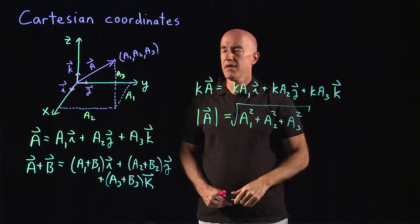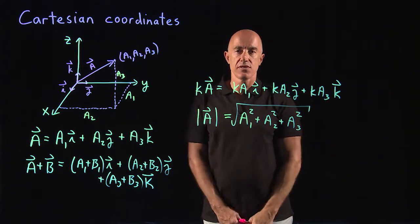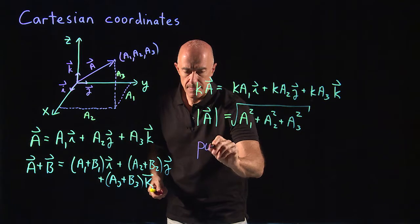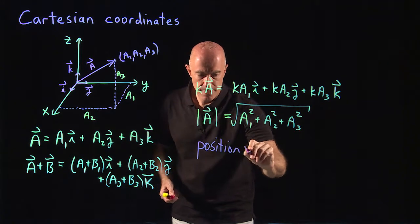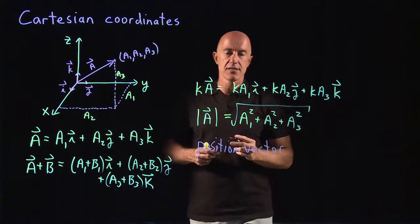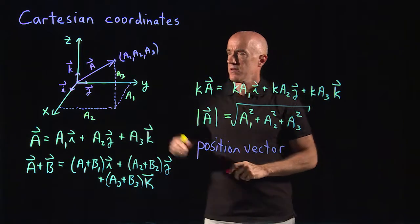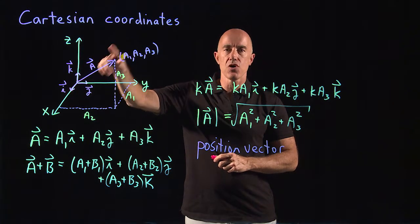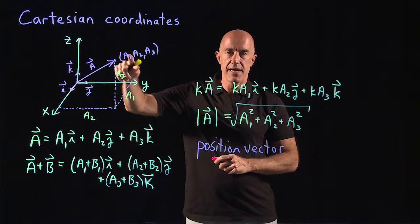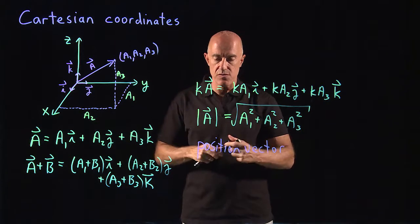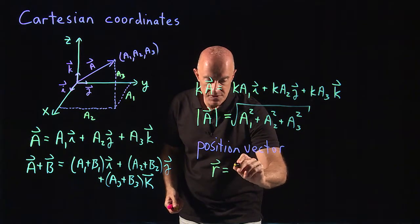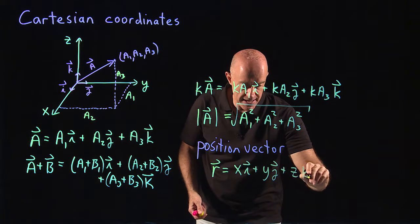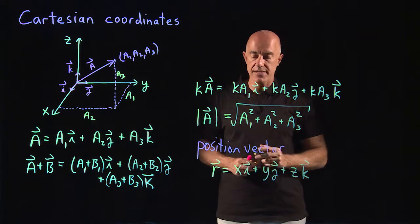There are two vectors that are widely used once you have a coordinate system. One vector is called the position vector. The position vector locates a point in space. So if you have some point x, y, z, the position vector when you place the tail at the origin then locates that point in space, points to that point. We're going to call the position vector r, and that will simply be xi plus yj plus zk. So that locates the point x, y, z in space.